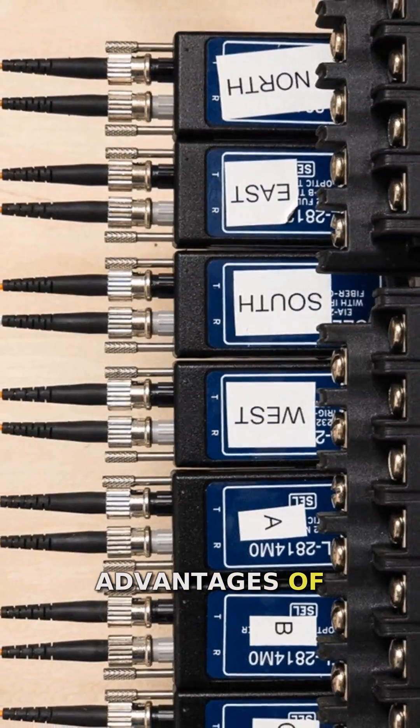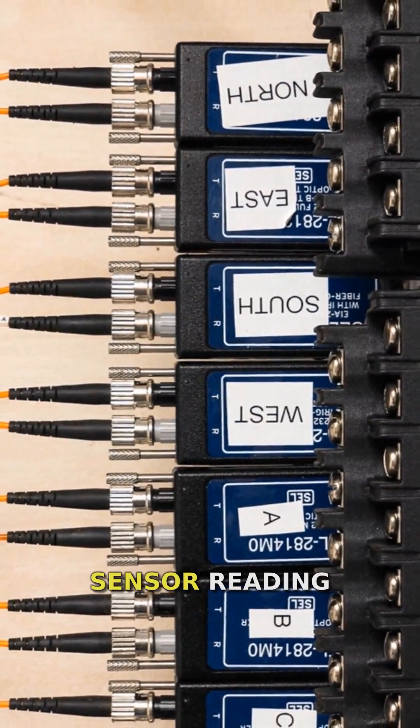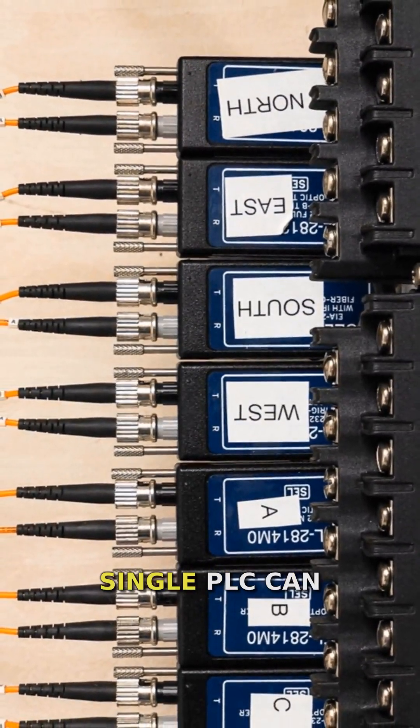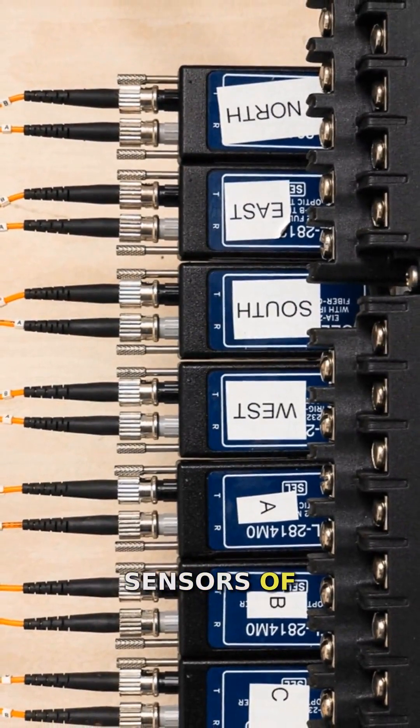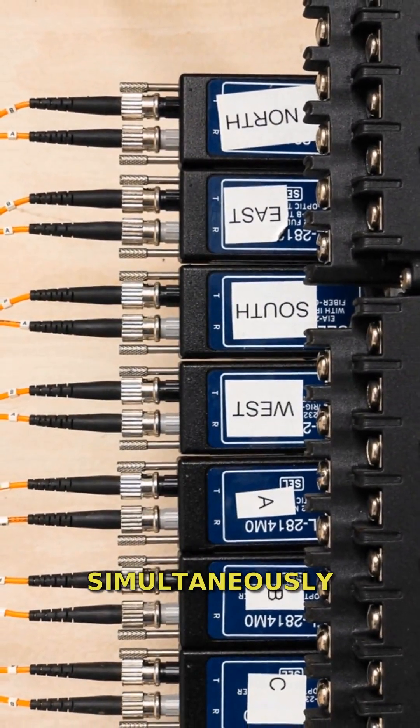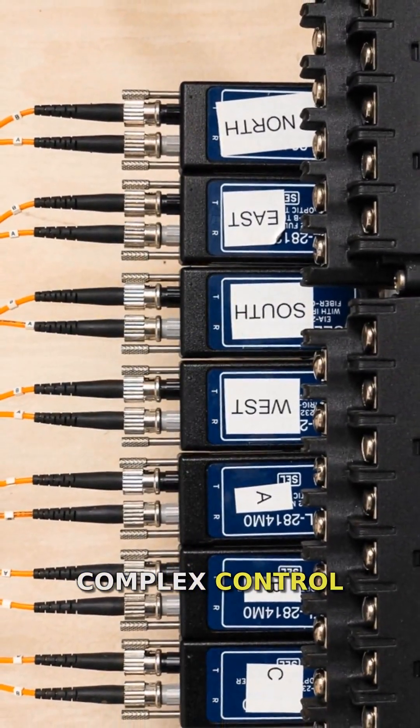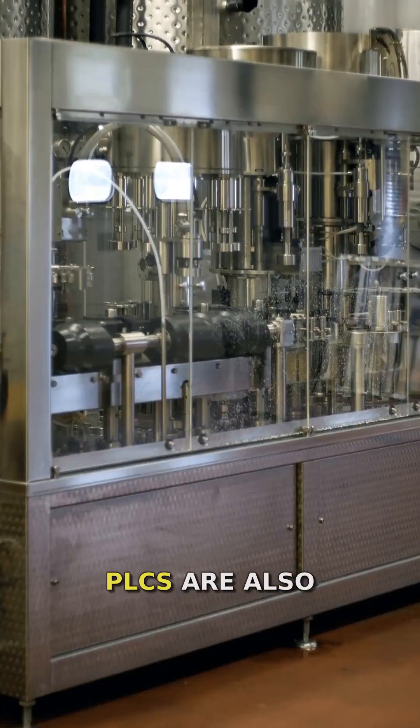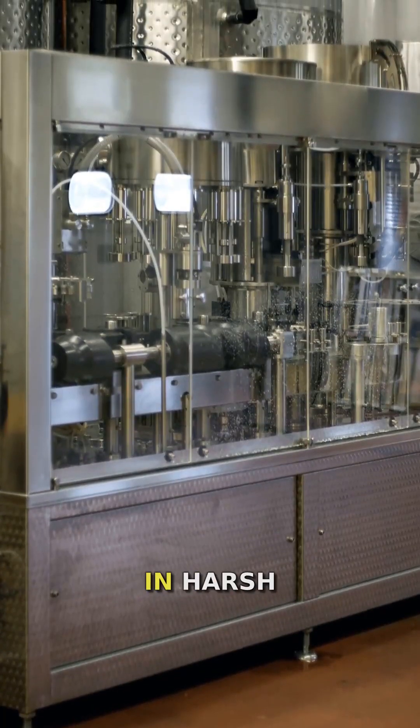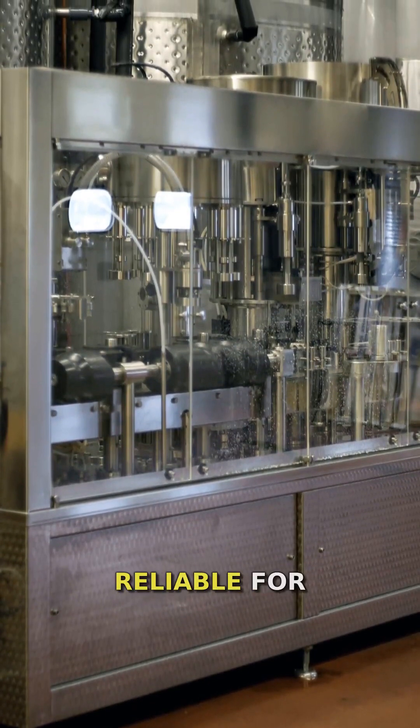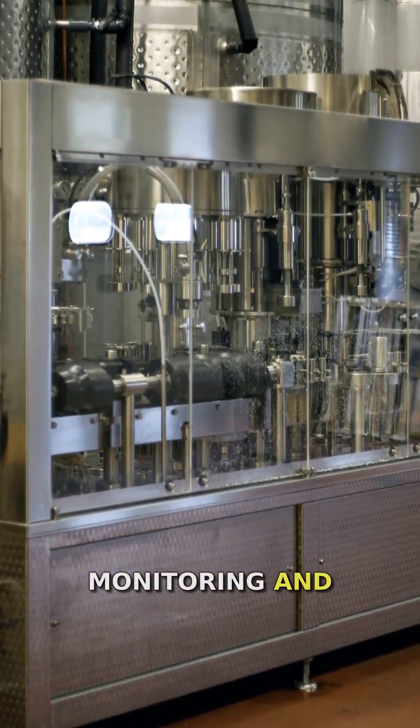One of the key advantages of using PLCs for sensor reading is their flexibility. A single PLC can read multiple sensors of different types simultaneously, allowing for complex control scenarios. PLCs are also designed to operate in harsh industrial environments, making them reliable for continuous monitoring and control.